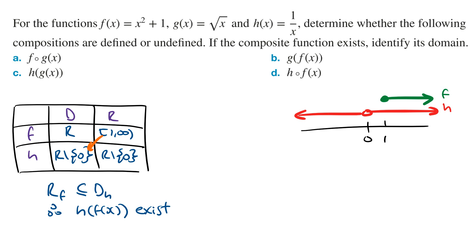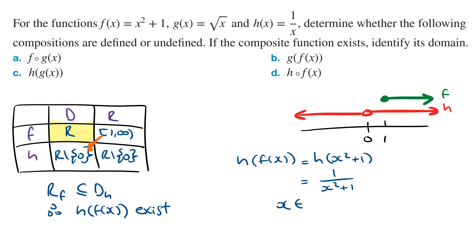Finding the rule of h of f of x: this can be written as h of x squared plus 1. Wherever there is an x in h of x, we replace it with x squared plus 1, giving 1 on x squared plus 1. The domain of this composite function is the domain of the inner function f, which is all real numbers.